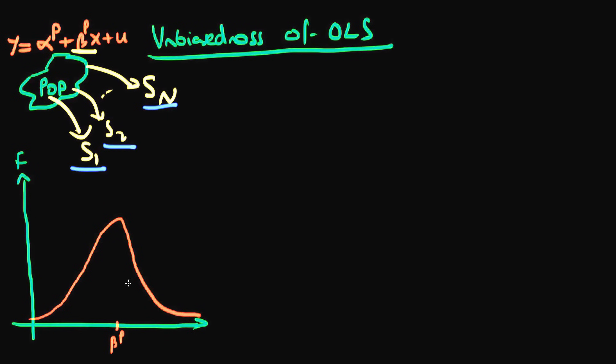So what does that mean? That means that if I apply my estimator beta hat to each of these samples, on average it comes out with an estimate for beta p which is about right. And how do we write that mathematically?